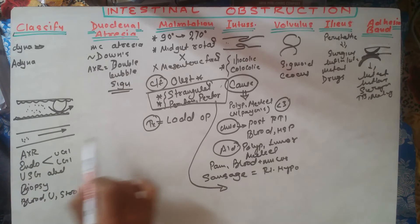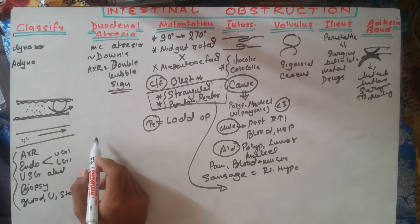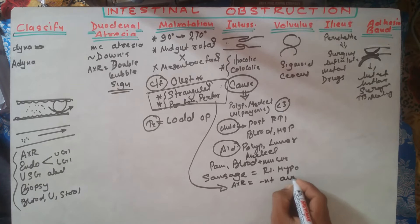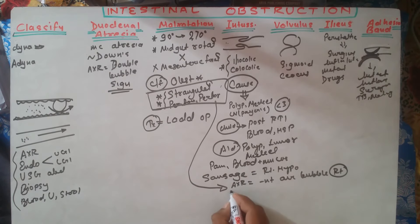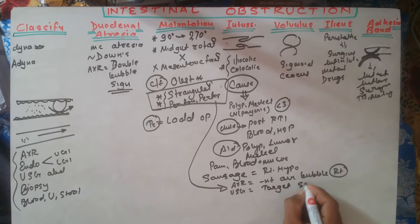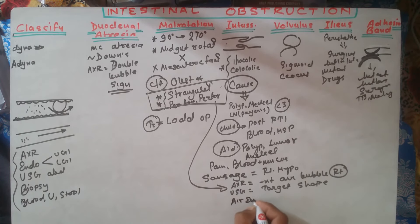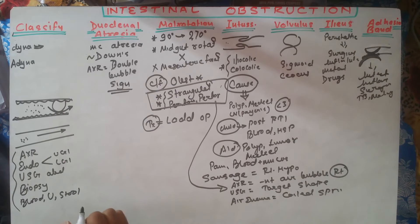For investigation, abdominal X-ray shows absence of air bubble in the right side. Ultrasound shows a target-shaped mass. Air contrast enema or air enema will show a coiled spring appearance, due to the invagination of the intestinal segment.